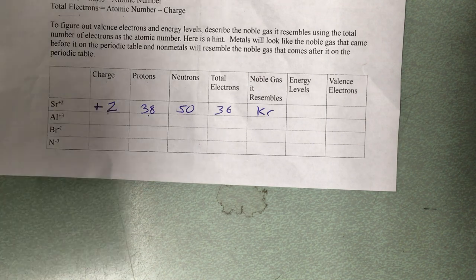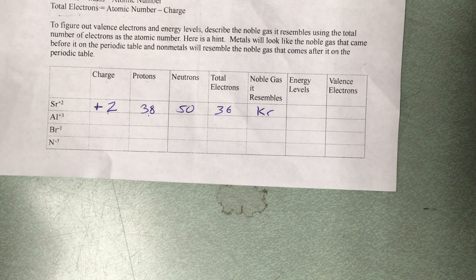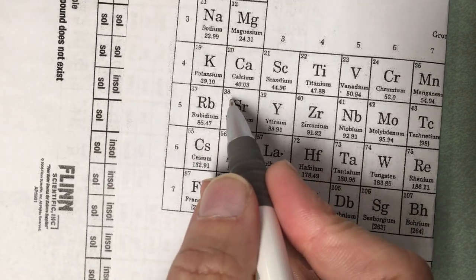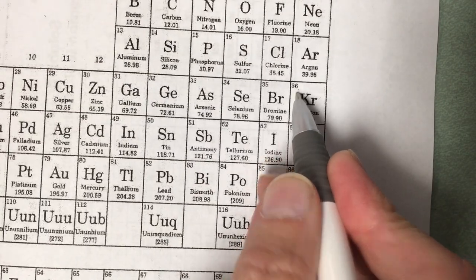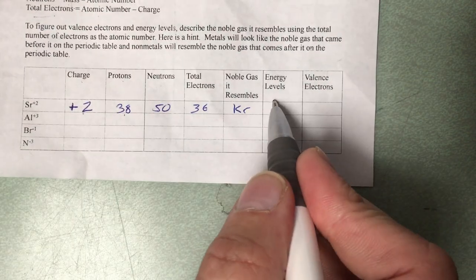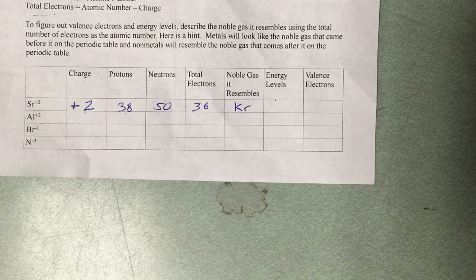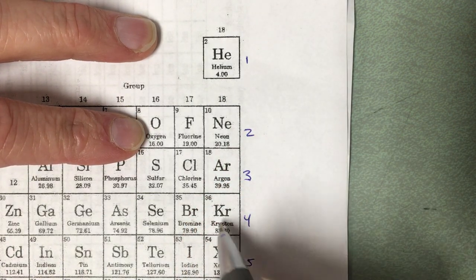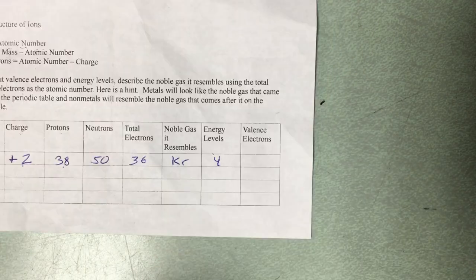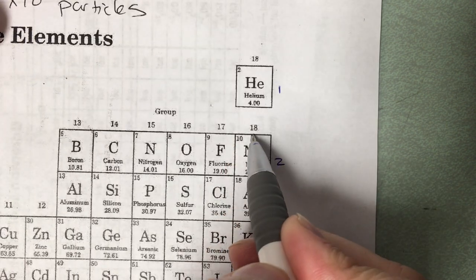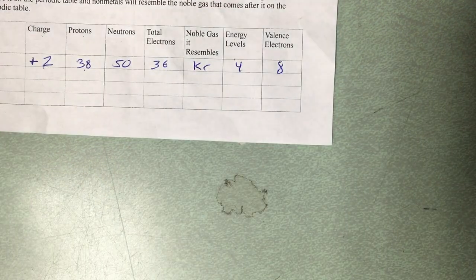Another way to figure that out is to work backwards from your metal. Metals will always resemble the noble gas that comes before it on the periodic table. So to figure out what noble gas comes before it, you work from your metal and count backwards: 38, 37, 36 — it'll resemble krypton and will have the same number of total electrons as krypton. Energy levels are the period number, but it's not the period number of strontium — it's the period number of that noble gas, of krypton. Krypton is in period 4, so we know it has 4 energy levels. And for valence electrons, it's the same number of valence electrons as krypton. Krypton is in group 18 — drop to 1 — so krypton has 8 valence electrons.